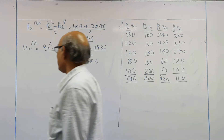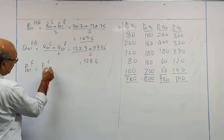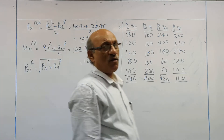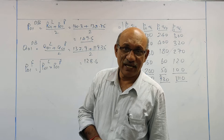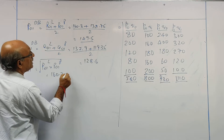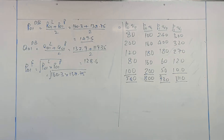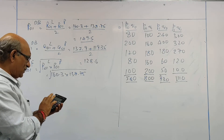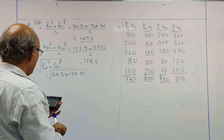Let's go for Fisher's method. Price index number by Fisher is equal to the geometric mean of Laspeyres and Paasche's index numbers — that is, price index number of Laspeyres into price index number of Paasche's, under root. So this is 160.3 into 138.75 under root, which is equal to 149.136.